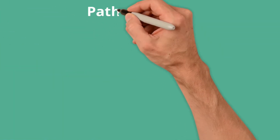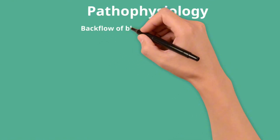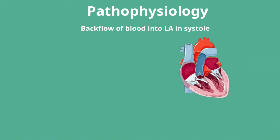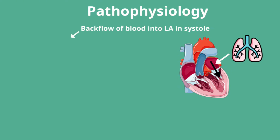Let's start by looking at the pathophysiology of mitral regurgitation. When the LV contracts, it now pushes blood both into the aorta in a forward direction, and backwards into the left atrium. At the end of ventricular systole, the left atrium now has more blood volume because it is receiving both blood from the lungs via the pulmonary veins, and backflowing blood from the left ventricle. When the mitral valve opens and diastolic filling begins, there is therefore an increased filling volume or preload into the left ventricle.